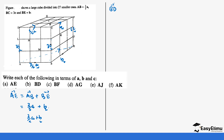For BD there's a diagonal across and the direction is from B to D. So it's the same as BA plus AD. BA is the reverse of AB which is 3/2a, so going the opposite direction it's negative 3/2a, plus AD which is 3c. So BD equals negative 3/2a plus 3c.